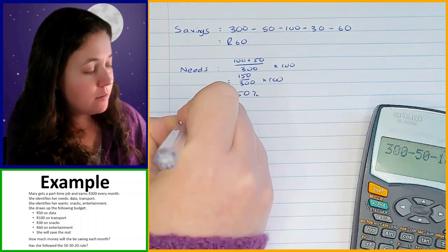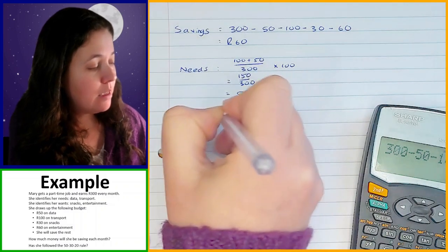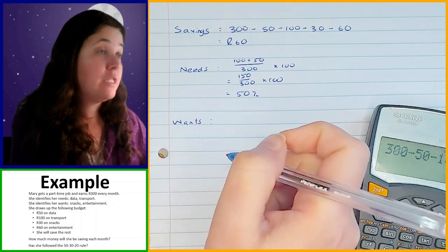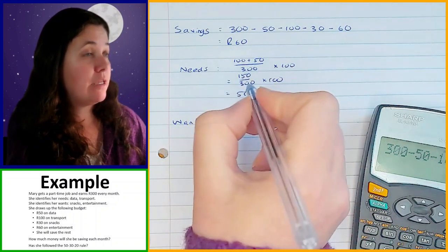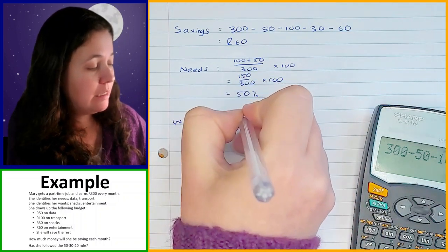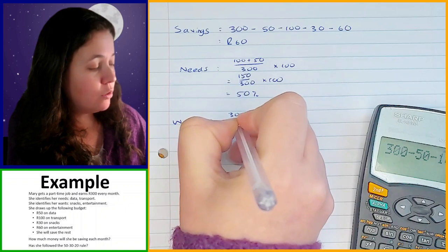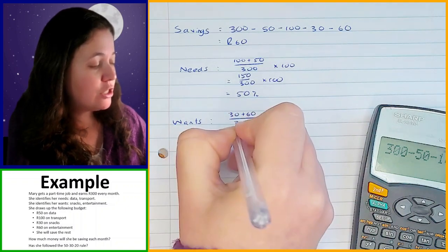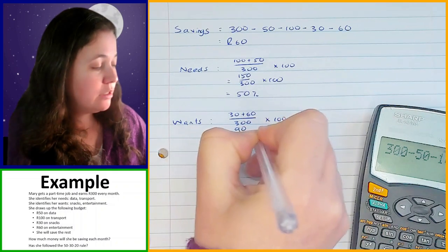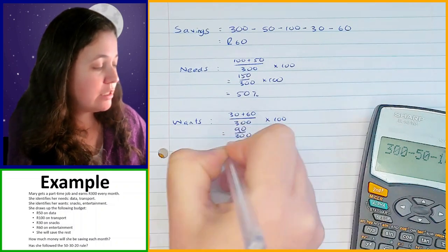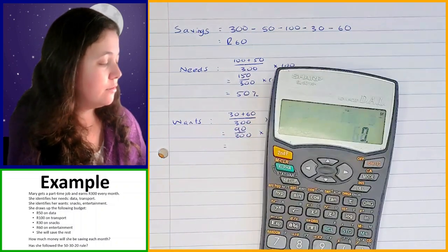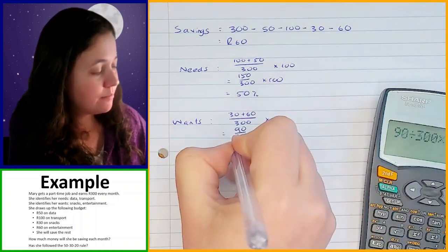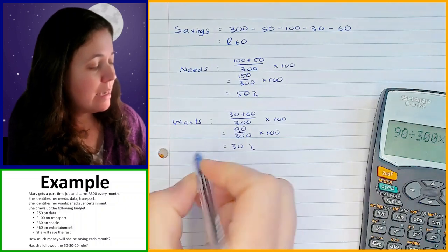Then her wants, we have got 30 rand on snacks, and 60 rand on entertainment. So that is 30 plus 60, also over the total of 300, multiplied by 100 to get a percentage. So that is 90 over 300 times 100, and that gives you 30%.